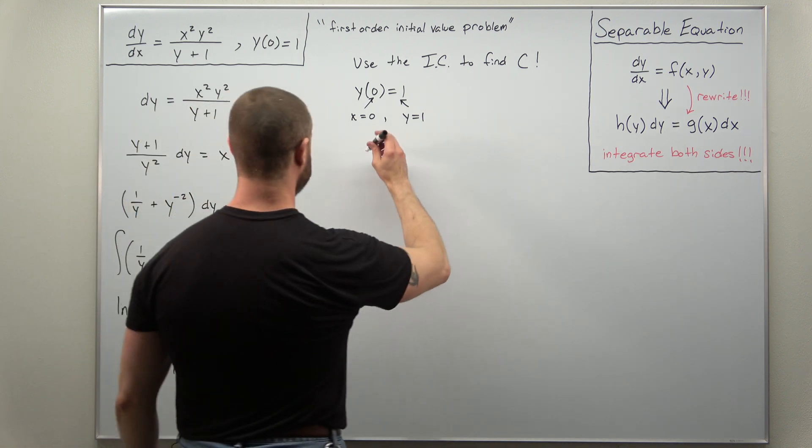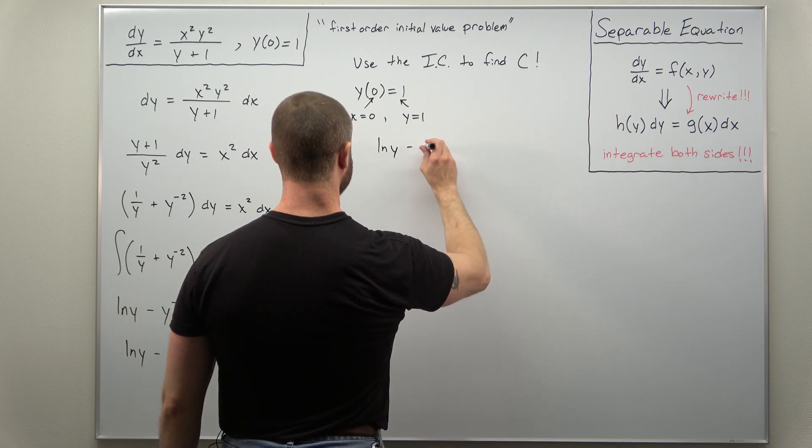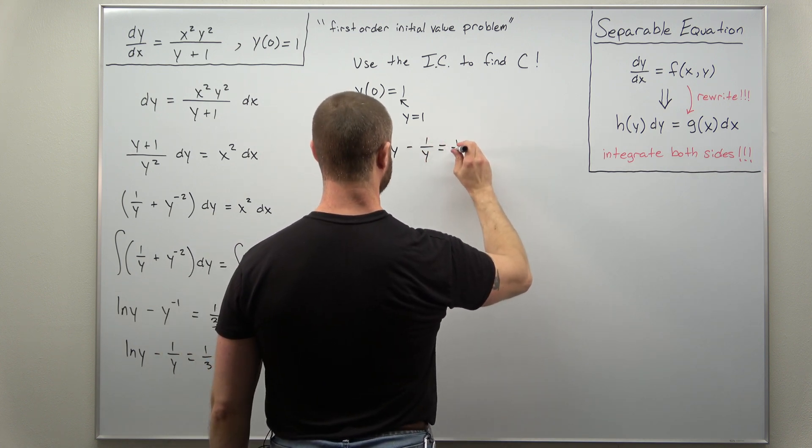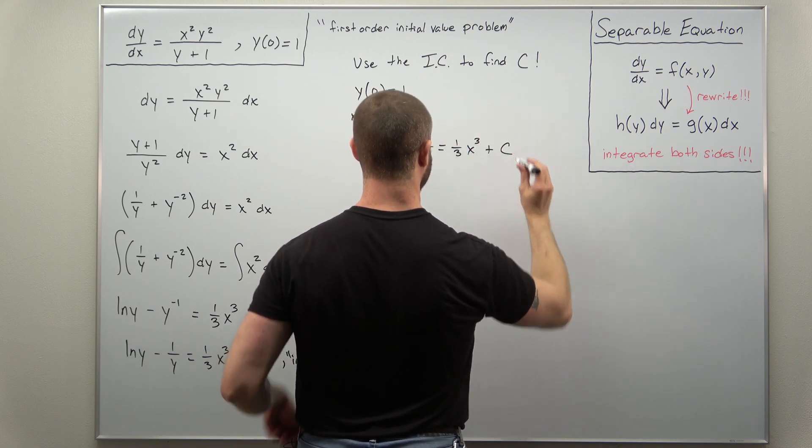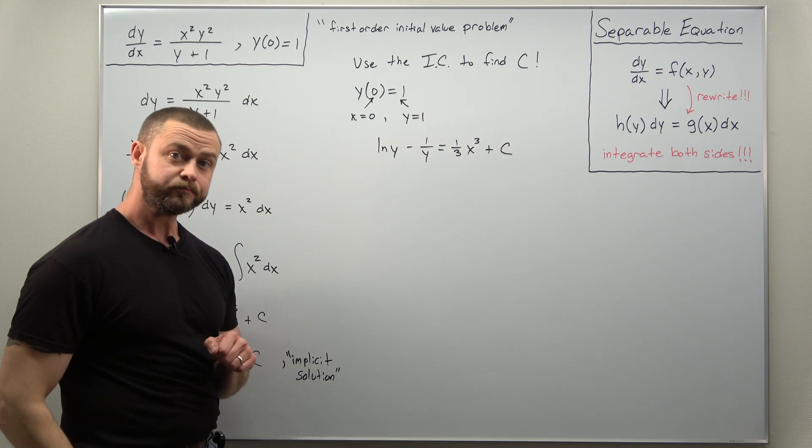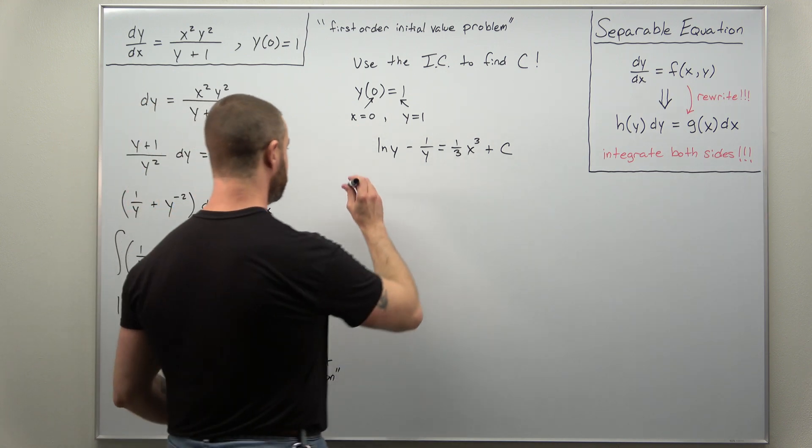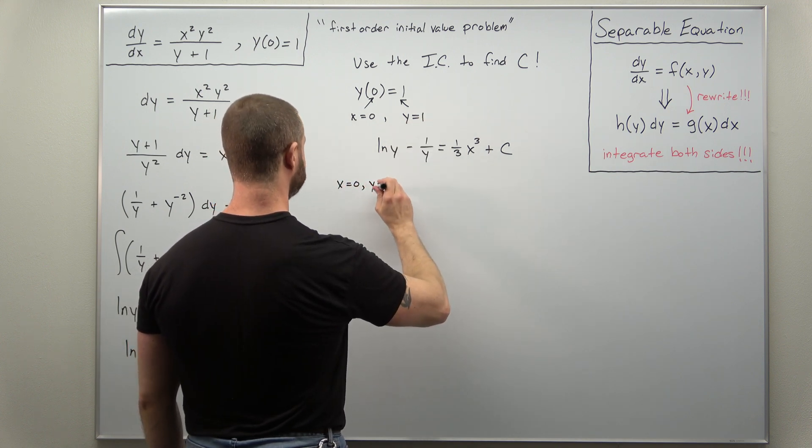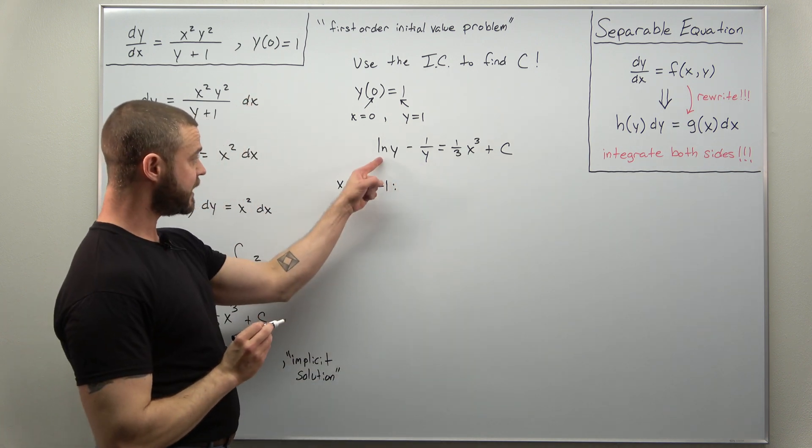All right. So let's go ahead to our solution. I'm going to write that down again. Natural log of y minus one over y and then equals one third x cubed plus c. All right. So we're going to take our time. We're going to plug in everywhere x is zero and with that we plug in simultaneously y as one.